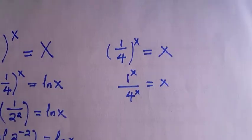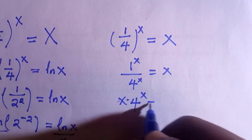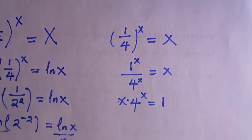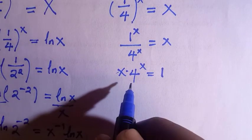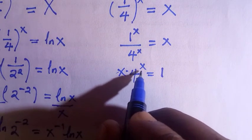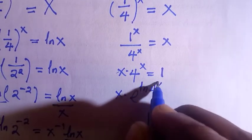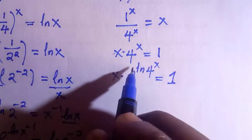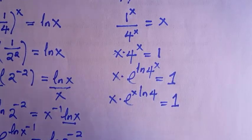If x is a member of the real numbers, after cross-multiplying, 1 raised to power x remains 1. Then for 4 to the power of x, I will introduce exponential and ln to bring the power of x down. So we have exponential of ln(4 to the power x) equals 1. Applying the law of logarithm, this becomes x·ln 4, and everything equals 1.